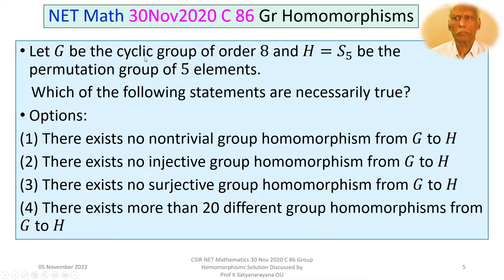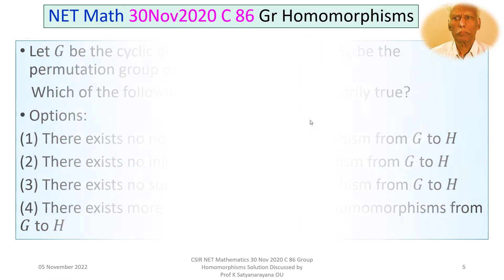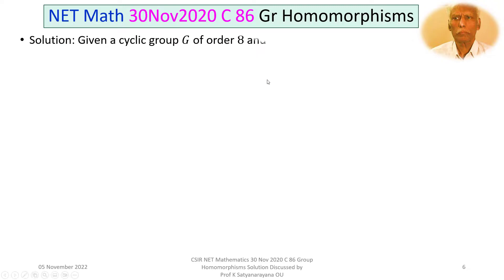So we are given G, a cyclic group of order 8, and H equal to S5, the permutation group on 5 elements. We have to decide which of the following statements are true. So let us now discuss the solution of the problem in detail.